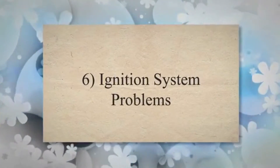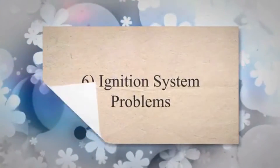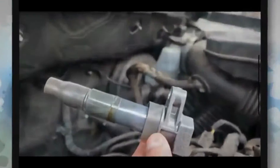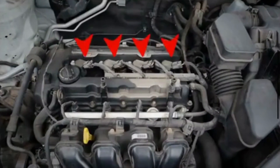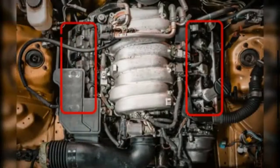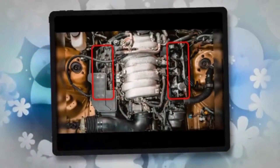6. Ignition system problems. Issues with the ignition system, such as a bad spark plug or ignition coil, can lead to incomplete combustion and cause the catalytic converter to work less efficiently.